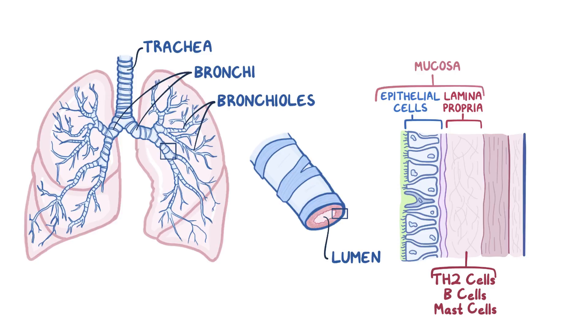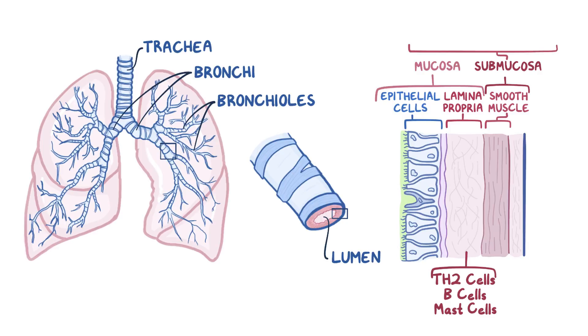Surrounding the lamina propria, there's a layer of smooth muscles and submucosa. This submucosal layer contains mucus-secreting glands and blood vessels.